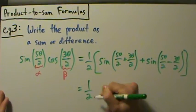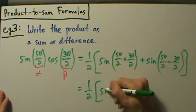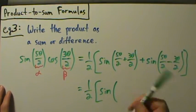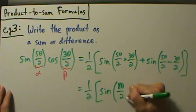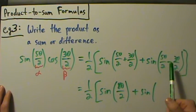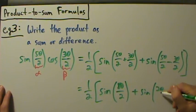And then when we simplify, we get one-half times open bracket the sine of 5θ over 2 plus 3θ over 2, that's going to be 8θ over 2, and then we have sine of 5θ over 2 minus 3θ over 2, that's 2θ over 2.